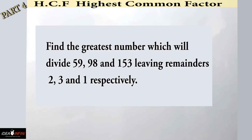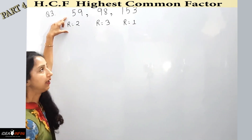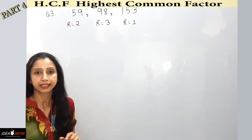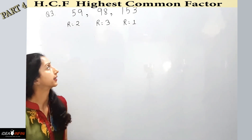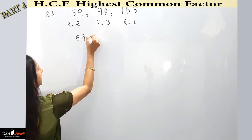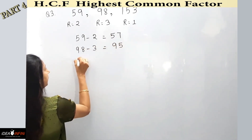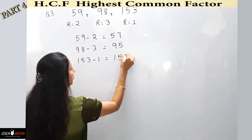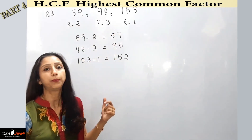Next example: find the greatest number which will divide 59, 98, and 153, leaving remainders 2, 3, and 1 respectively. I have three numbers, and when divided by the HCF they leave remainders 2, 3, and 1. Subtracting the remainders: 59 minus 2 is 57, 98 minus 3 is 95, and 153 minus 1 is 152. These are now perfectly divisible by the number we seek.